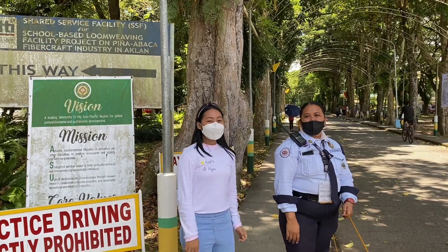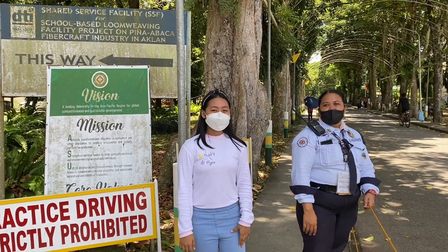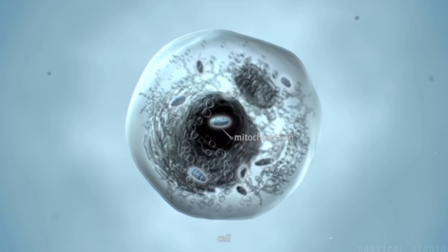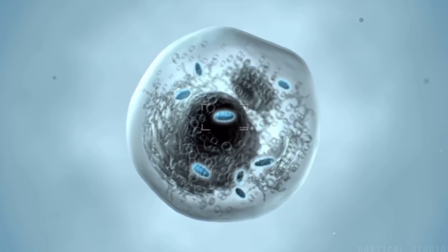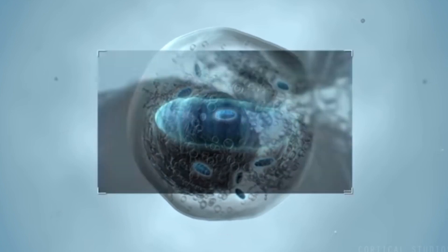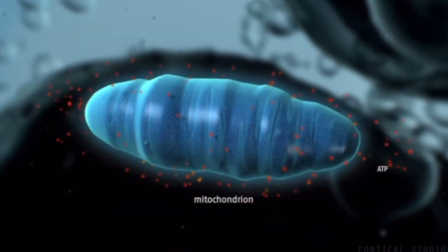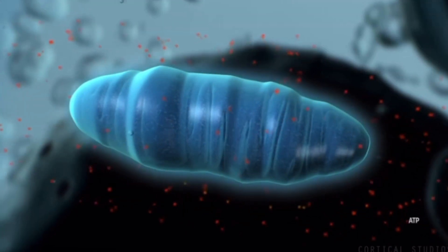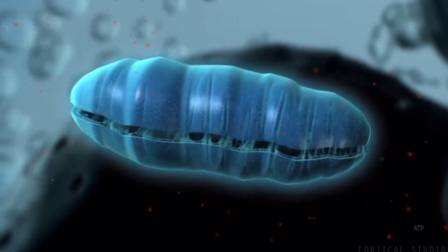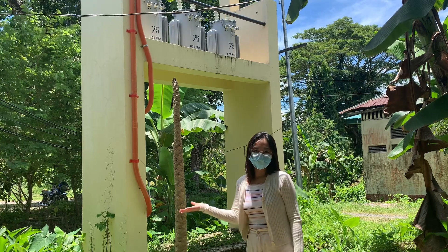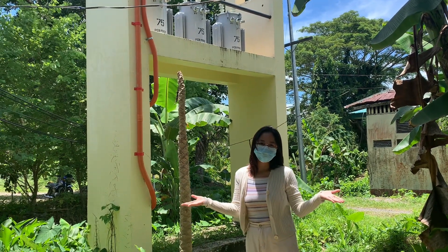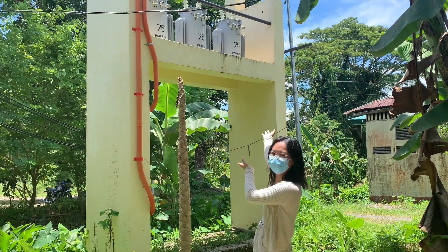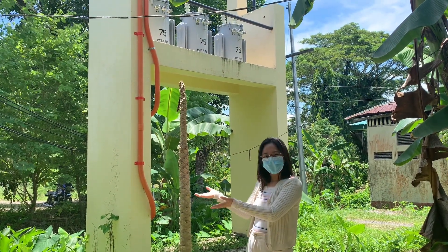The mitochondrion is an organelle within eukaryotic cells that produces adenosine triphosphate, or ATP — the main energy molecule used by the cell. For this reason, the mitochondrion is sometimes referred to as the powerhouse of the cell. As a representation of this organelle, power lines are presented, which produce electricity that gives energy to the whole school.